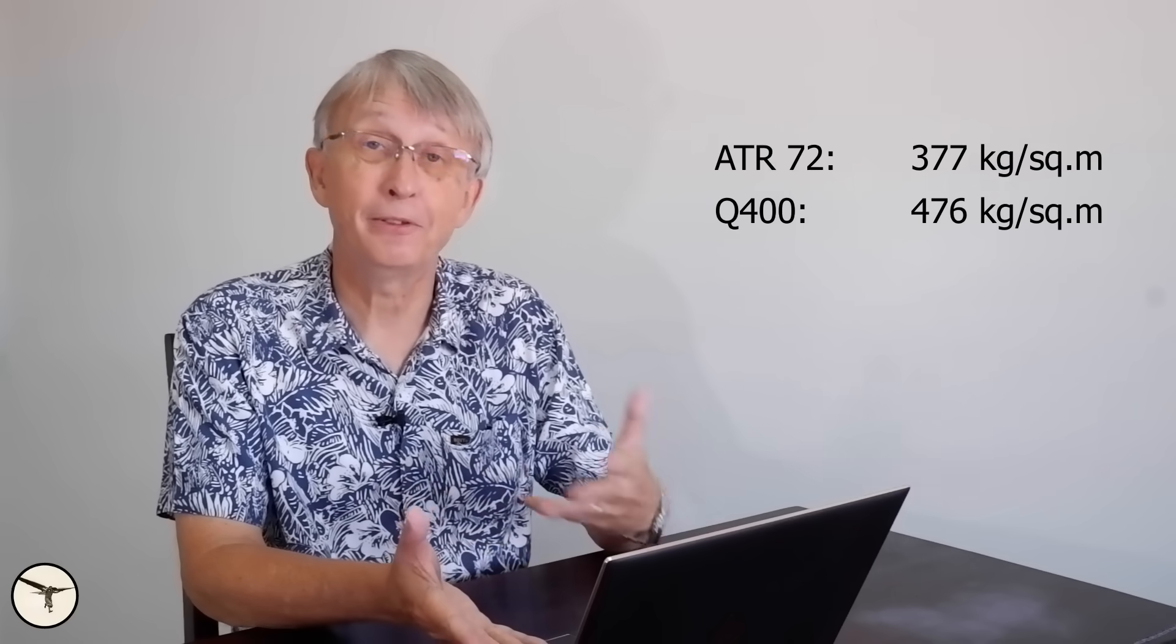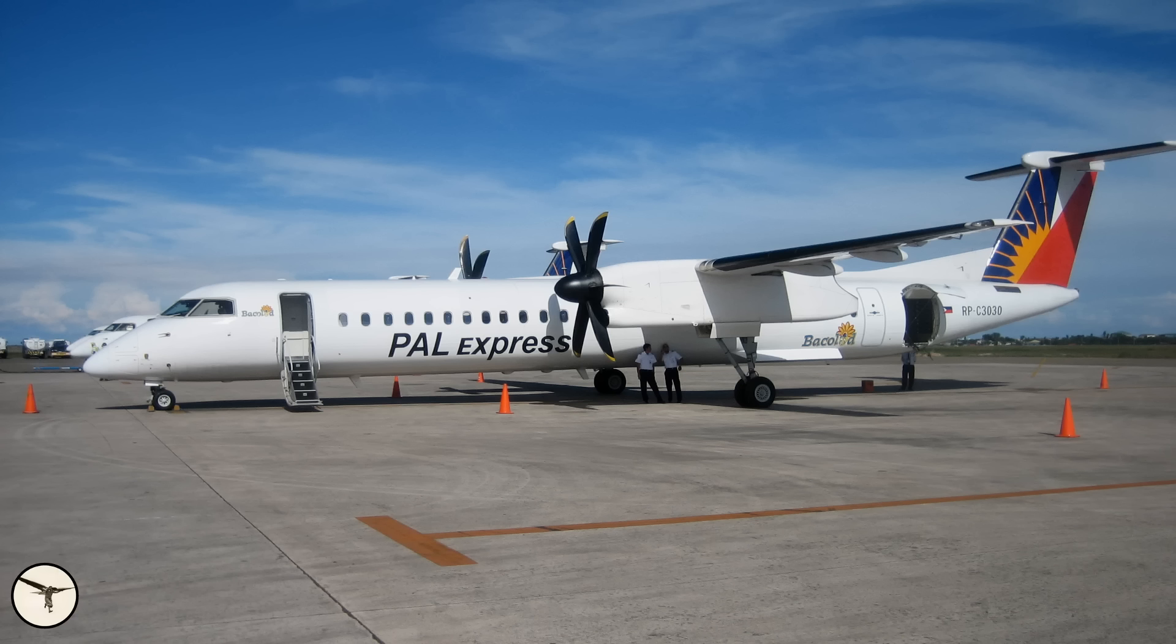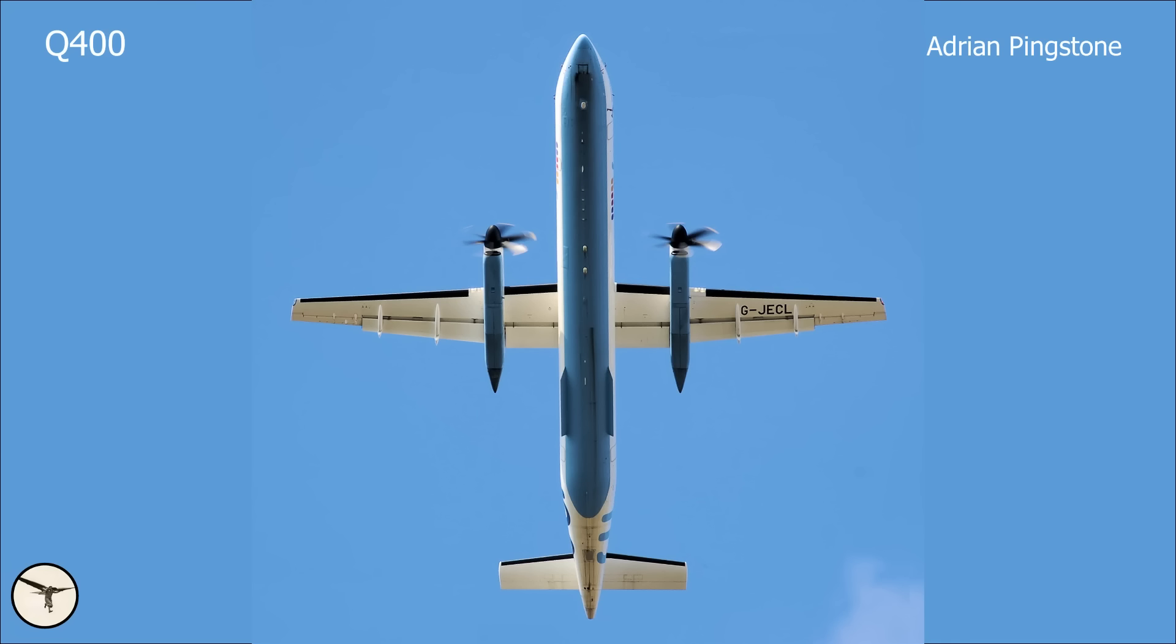And this difference is because the Q400 is made for a different kind of operation compared to the ATR-72. The Q400 competes with the jets. And if you want a fast aircraft you need to reduce the wing area. It's that simple.